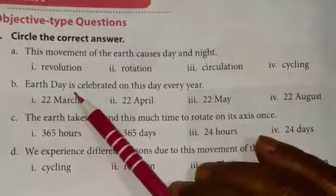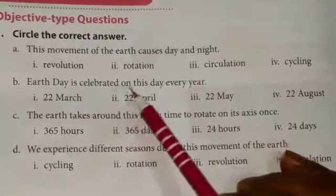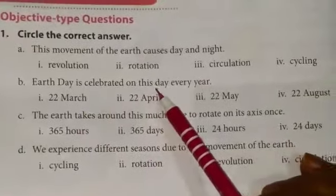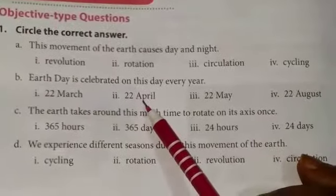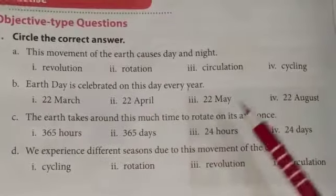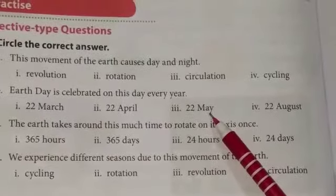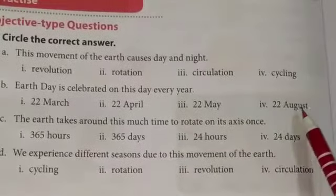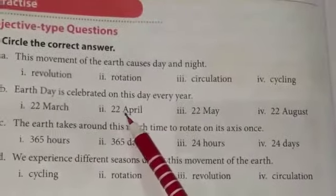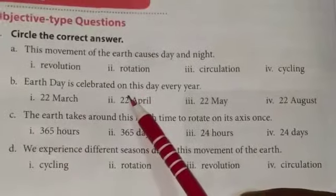Earth Day is celebrated on this day every year. Options: 22nd March, 22nd April, 22nd May, 22nd August. You circle 22nd April.